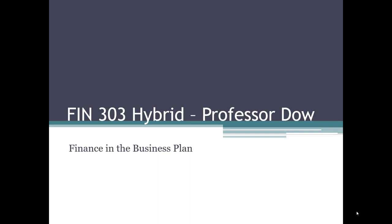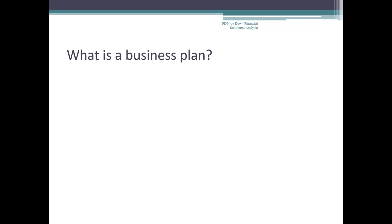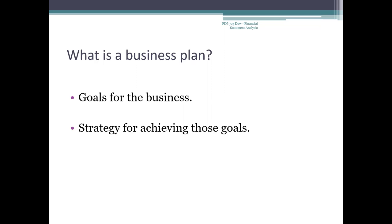Every business should have a plan. A business plan should have explicit goals so that the company knows what it wants to achieve and can evaluate whether it is achieving it. It also should have an explicit strategy for achieving those goals. For small businesses, the business plan will focus more on the operational details of the company and practical issues such as working capital management. For large companies, strategic issues will be more important.